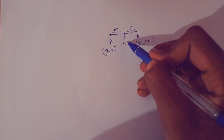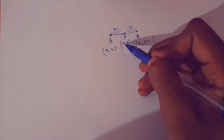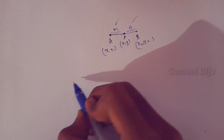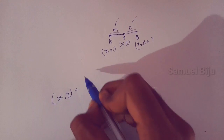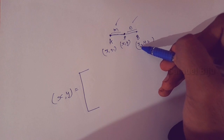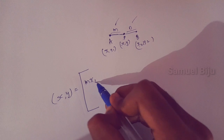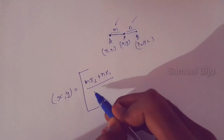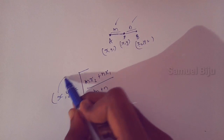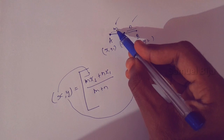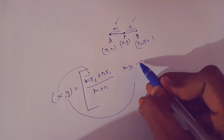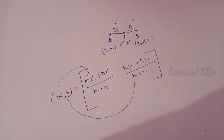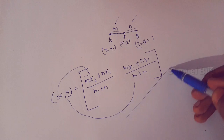If we have questions about this section formula, we will discuss the value of x and y. We have the equation: x equals m into x2 plus n into x1 divided by m plus n, and y equals m into y2 plus n into y1 divided by m plus n. This is a simple formula.